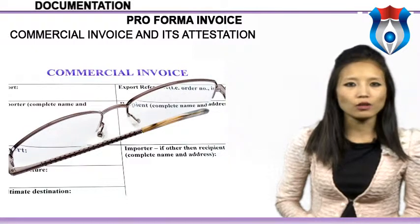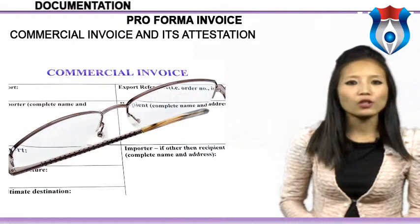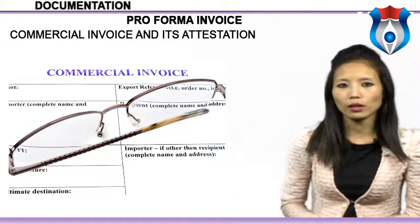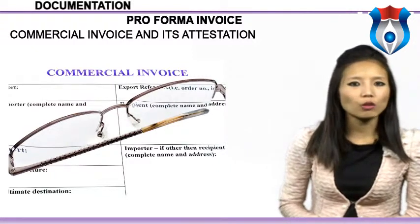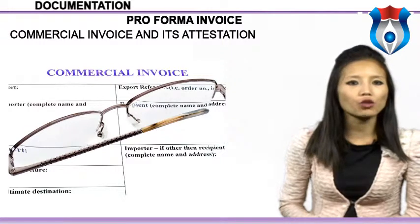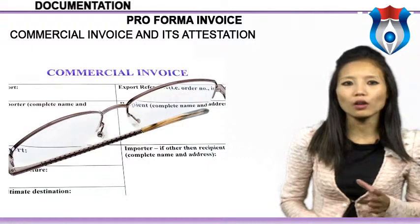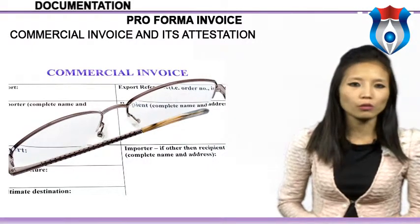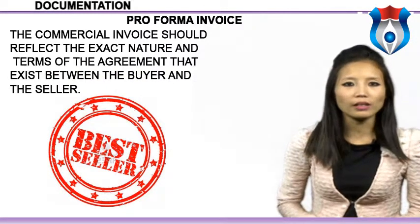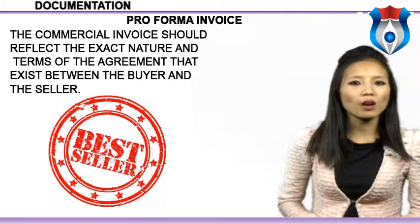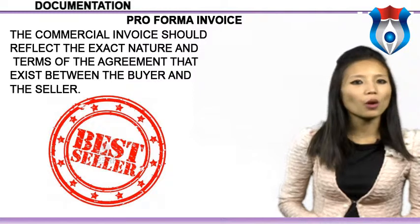The commercial invoice is considered to be the most important international trade document and should be prepared as accurately as possible. It is the main document used by customs to accept or reject the customs entry prepared by the customs broker. Even with a sample shipment, a commercial invoice is required and needs to state that the goods are not for resale, are samples only, and have little commercial value. The commercial invoice should reflect the exact nature and terms of the agreement that exists between the buyer and the seller.